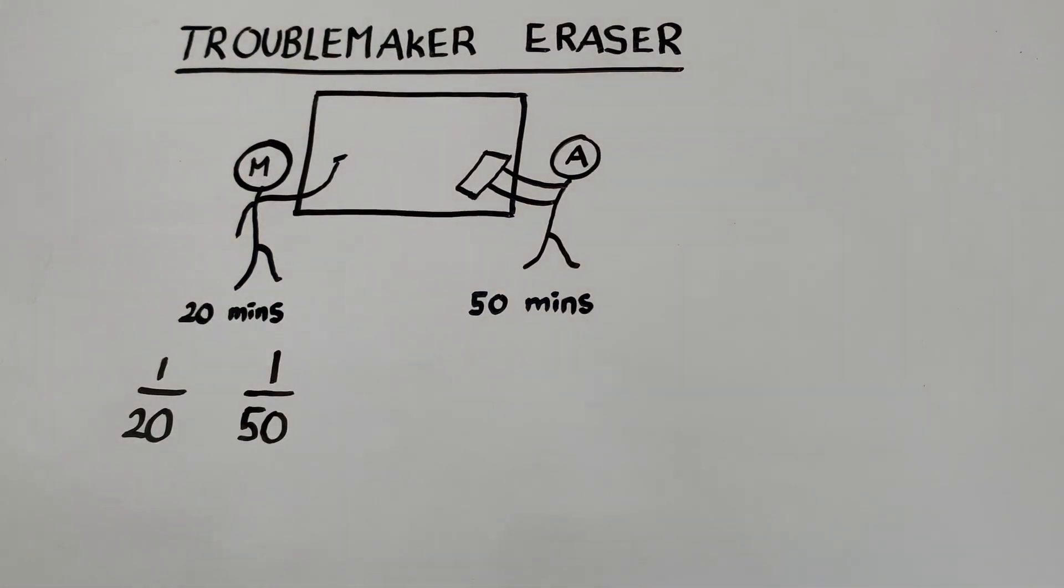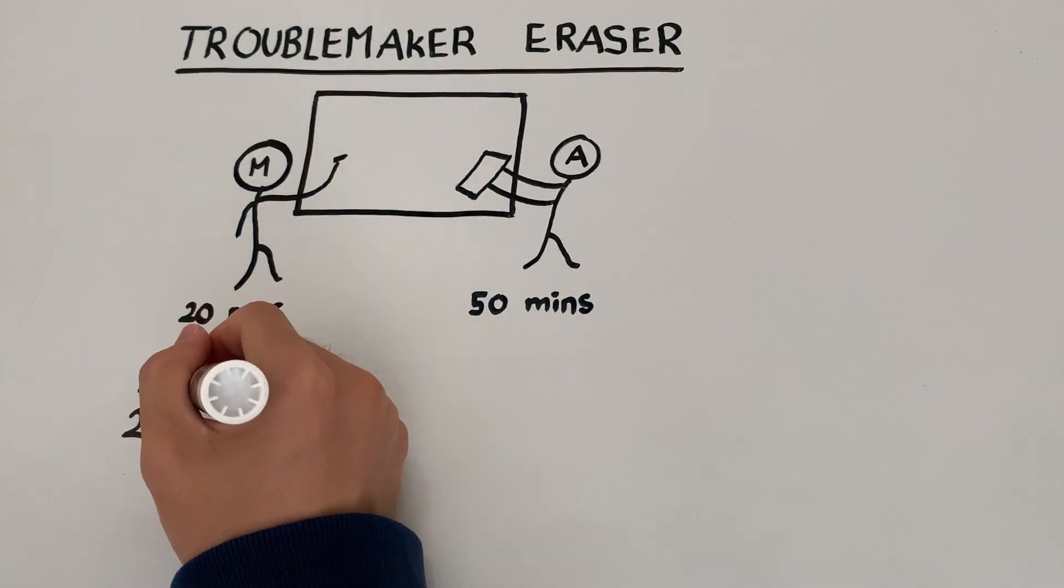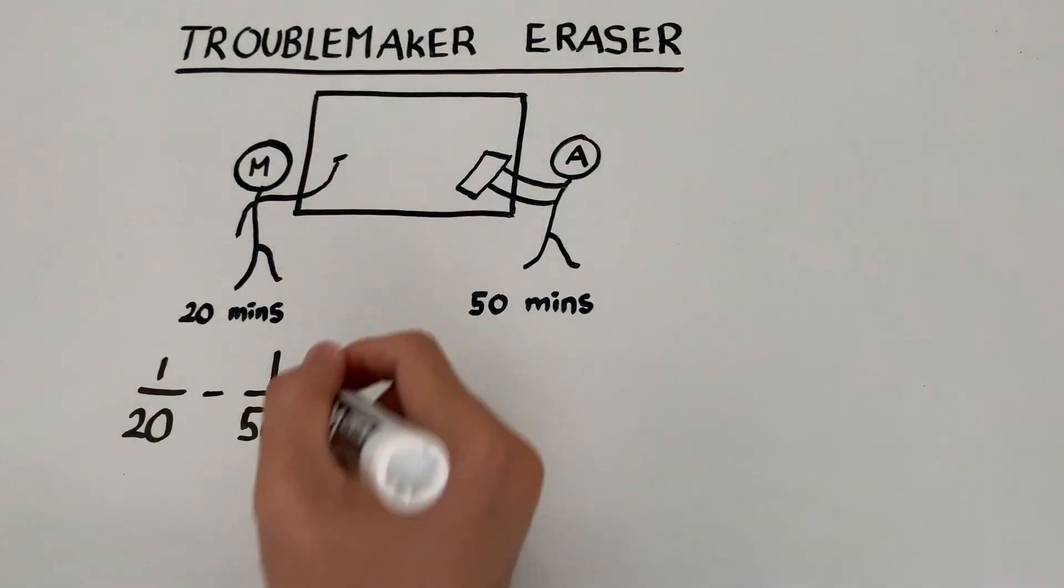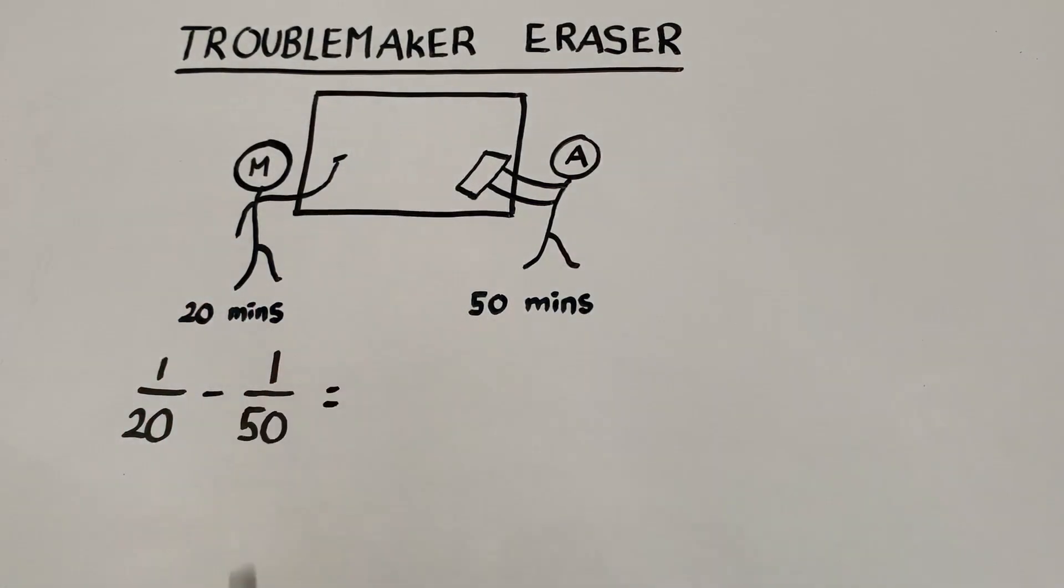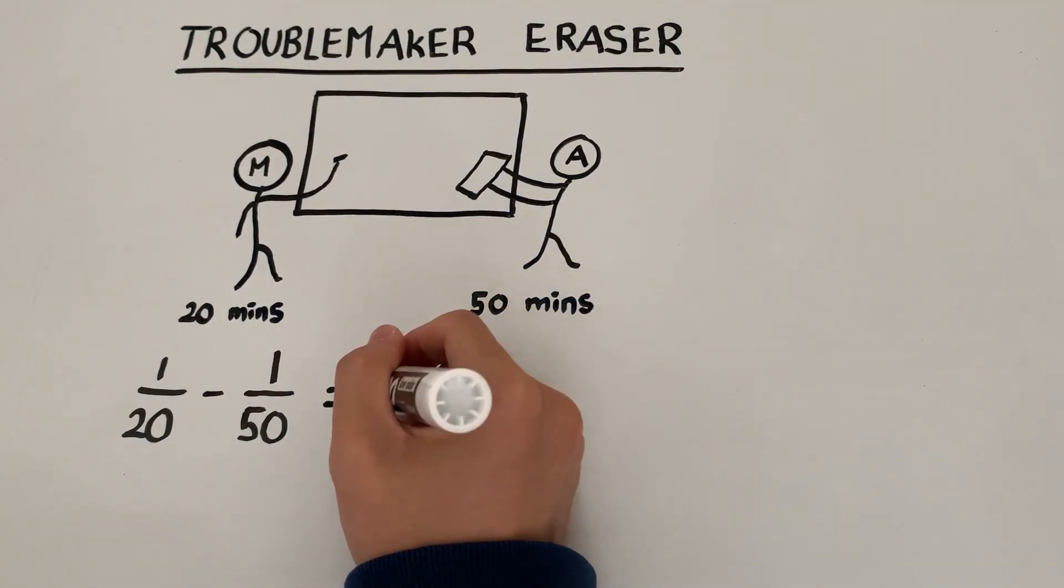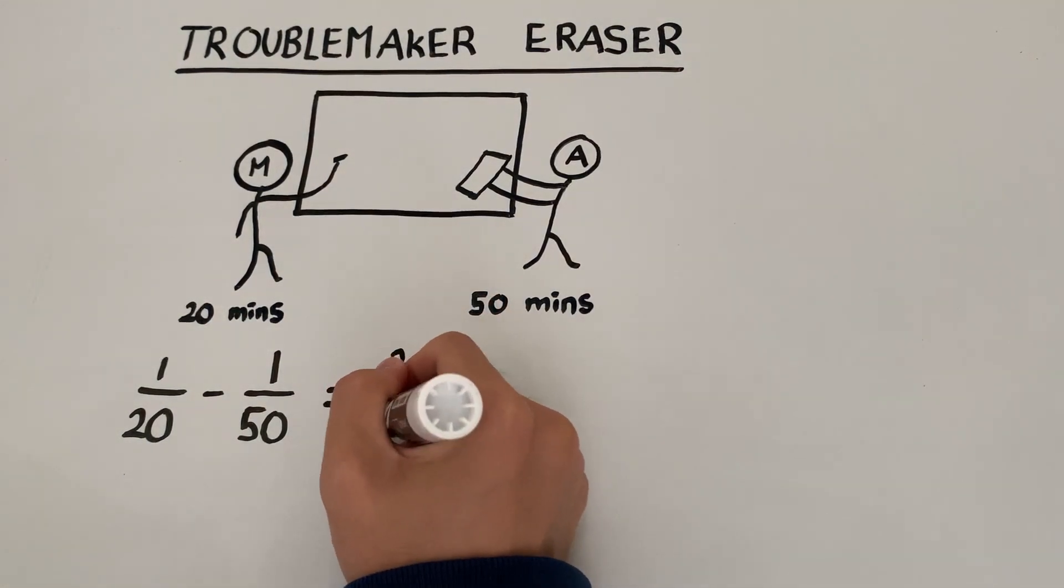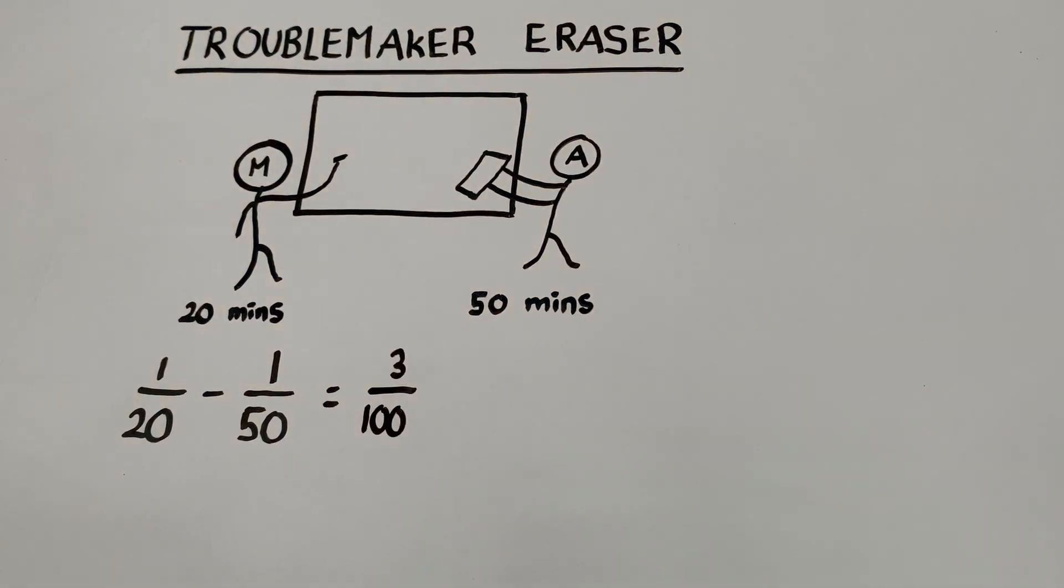So, during each minute we see that 1/20th of the board is getting covered, but 1/50th of the board is getting erased. And since Adam is literally taking away Mark's progress, we see that during each minute, 3/100ths of the board is being covered.